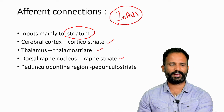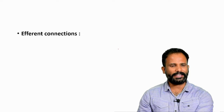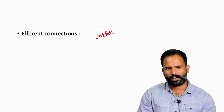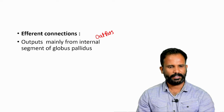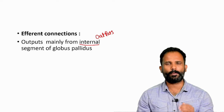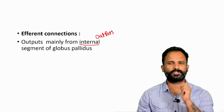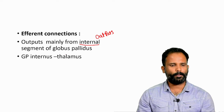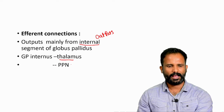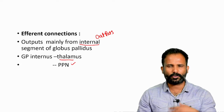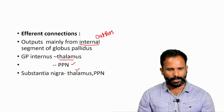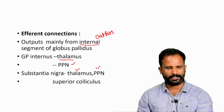Efferent connections are the outputs. The prime outputs are through globus pallidus, and the principal segment is the interna, so globus pallidus interna is the main output zone. Globus pallidus interna sends information to the thalamus and pedunculopontine nucleus. Substantia nigra also sends output to the thalamus, pedunculopontine nucleus, and superior colliculus.